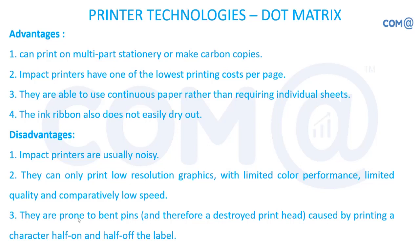Disadvantages: impact printers are usually noisy — once it prints, it keeps making noise, which can be a headache. They can only print low resolution graphics, so for graphics we cannot prefer a dot matrix printer — only text should be preferred. They are prone to bent pins: because of continuous printing, the print head pins can get damaged. With nine pins, even if one pin is damaged the printout will not come properly, and you will likely need to replace the print head.